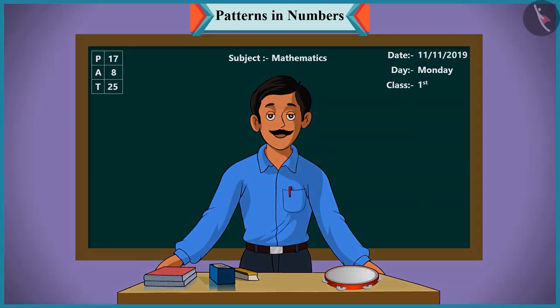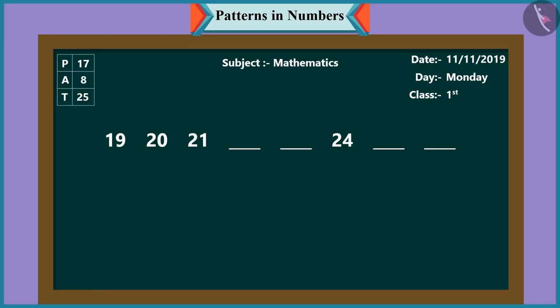Rightly said. Now look, another pattern of numbers. Come, let us understand this one. In this pattern, it is 19, then 20, then 21. This means that each time the numbers are increasing by one.